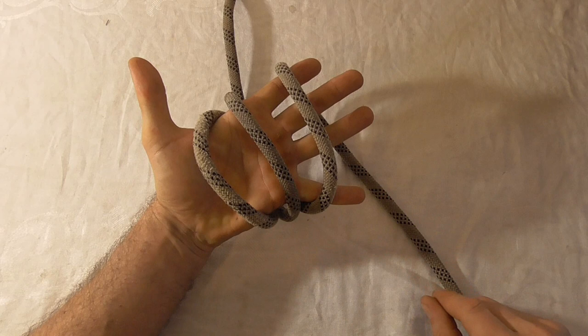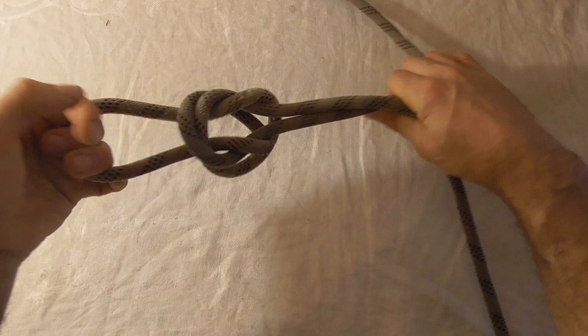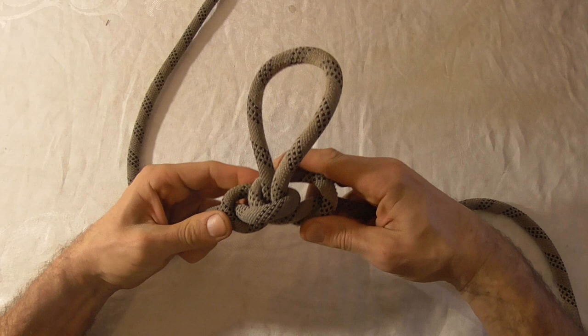And then take the new wrap that's closest to your thumb, take it over both those wraps, grip it and then pull it through and pull the whole thing tight by pulling on both these ends.